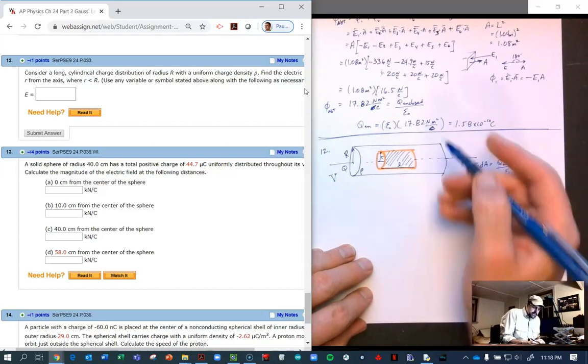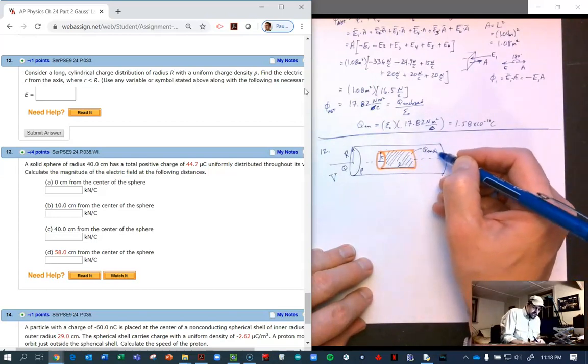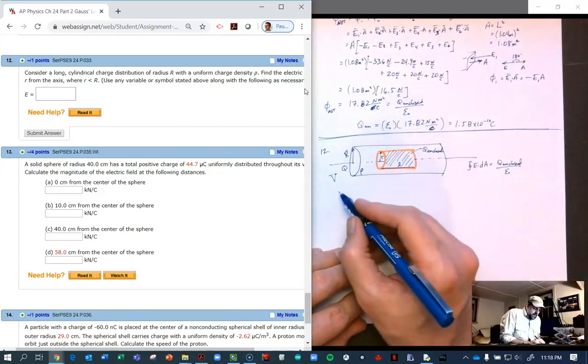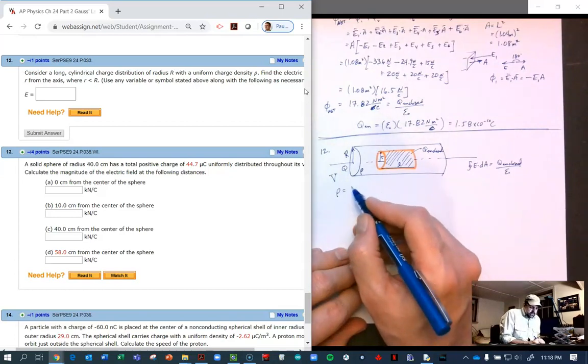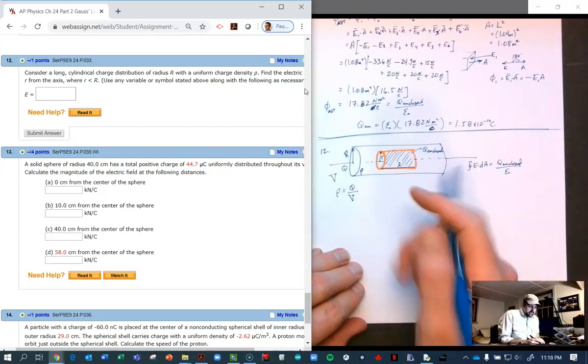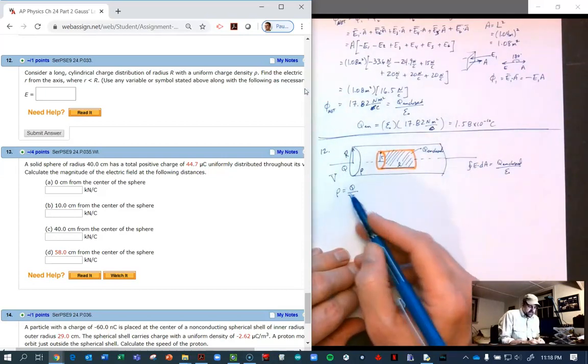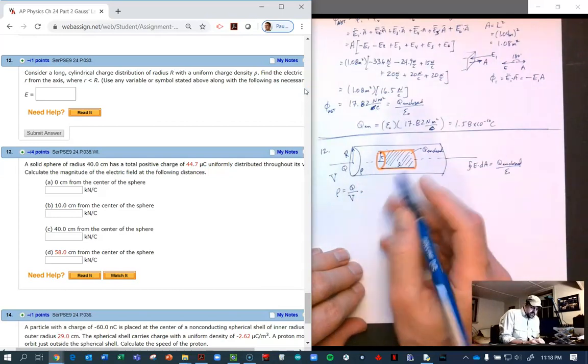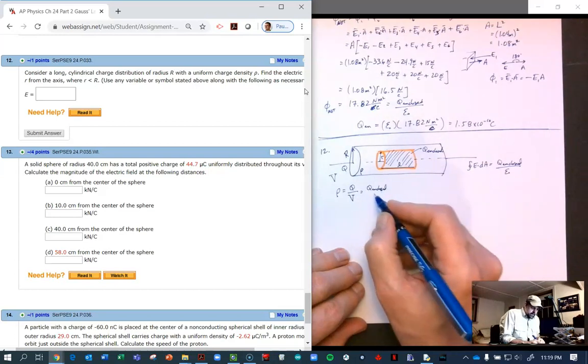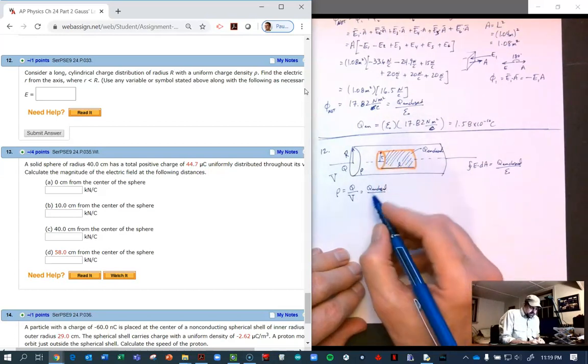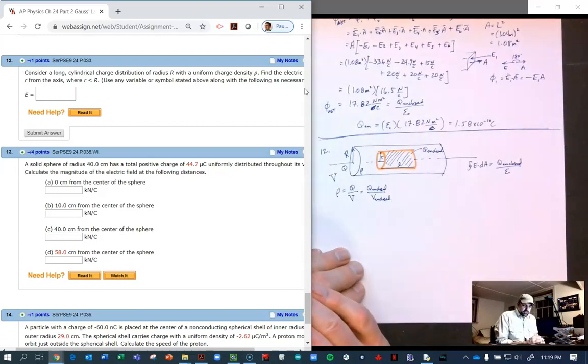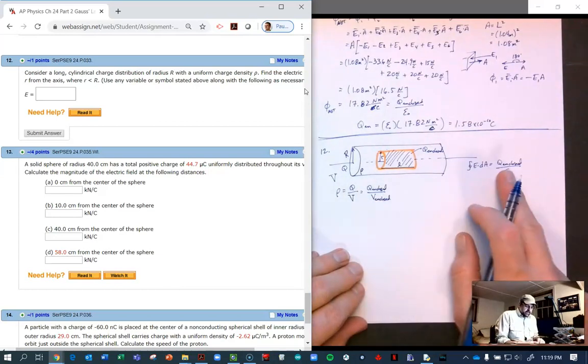Because the density is uniform, we know that the density is charge over volume. We look at the entire cylinder, it's the entire charge over the entire volume, but it's also equal to the Q enclosed over the volume enclosed. That's going to help us rewrite what Q enclosed is.